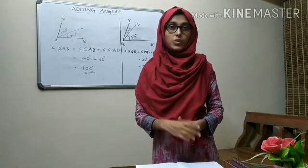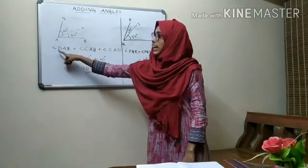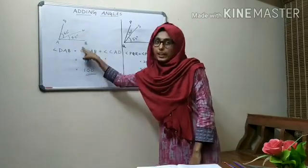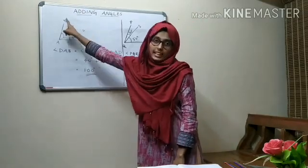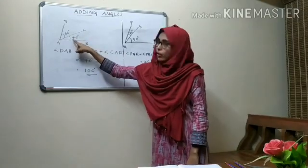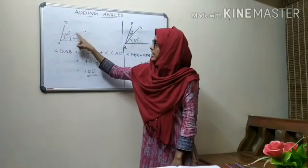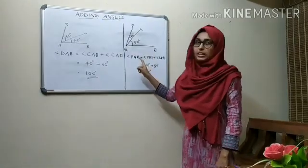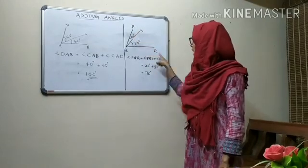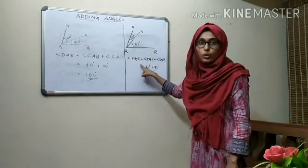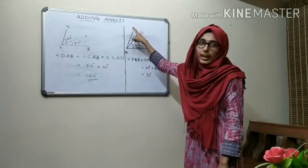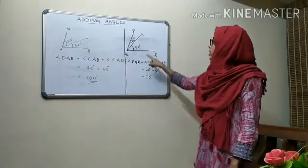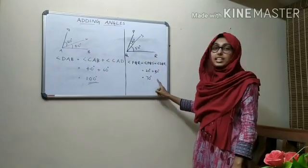Now I am showing you some examples. The bigger angle DAB equals angle CAB plus angle CAD. Angle CAB is 40 degrees plus angle CAD which is 60 degrees — we got 100 degrees. Another example: the bigger angle PQR equals angle PQS plus angle SQR. They are 20 degrees plus 50 degrees — that is 70 degrees. So these are the two examples.